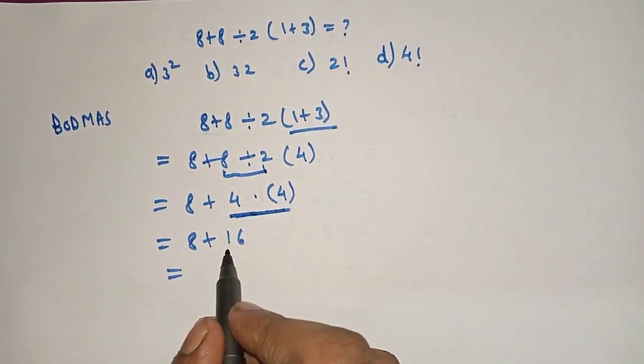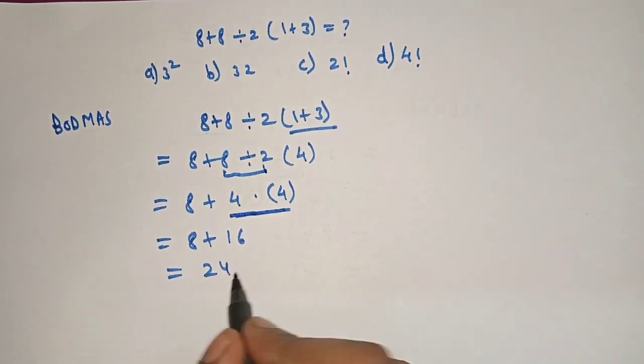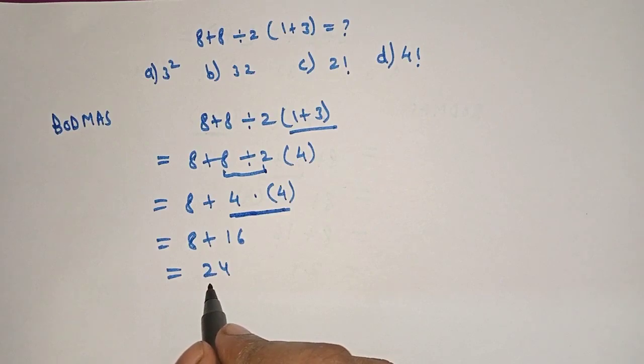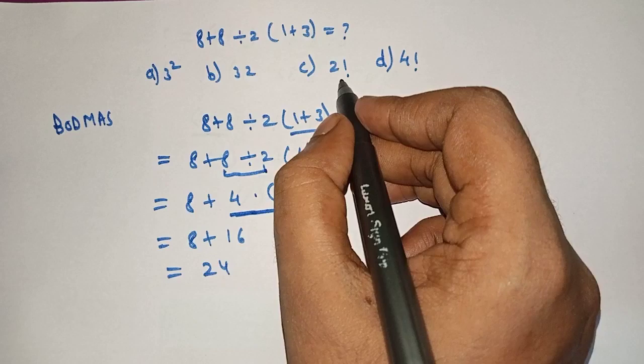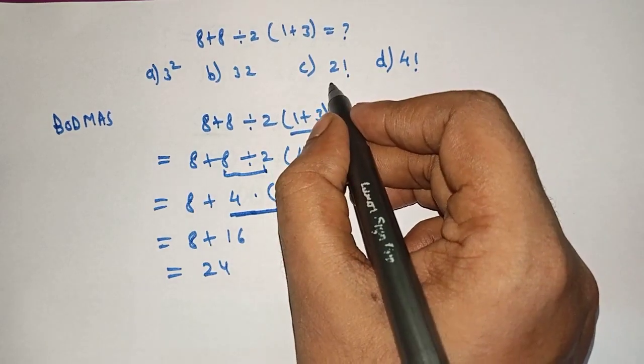Therefore, 8 plus 16 is equal to 24. Our answer is coming 24. Here, 2 factorial is equal to 2 into 1 which is equal to 2.